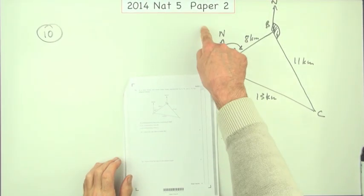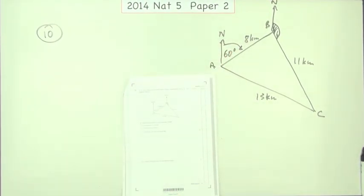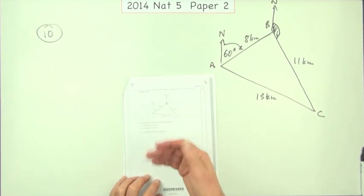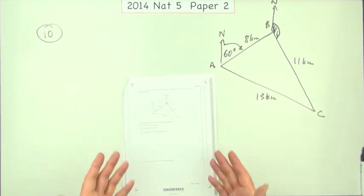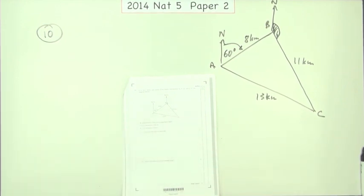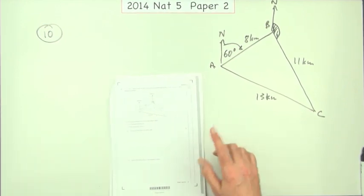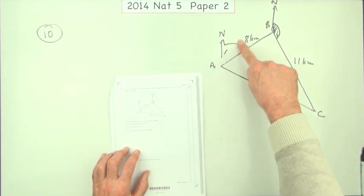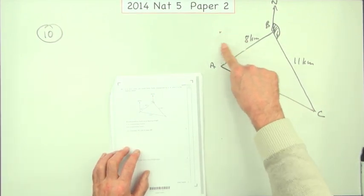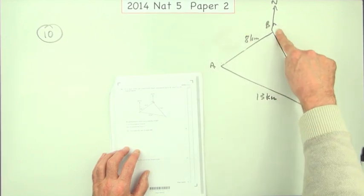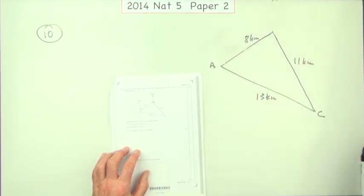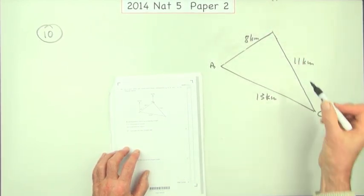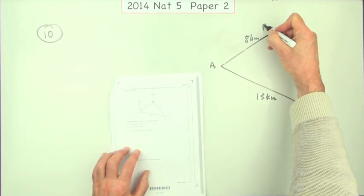Question 10 from Paper 2 of the 2014 National 5. This is a bearings question, except they've not really made it a full bearings question because they've done most of it for you. This is the type of question where originally it wouldn't have given you this information — it wouldn't have given any of these clues about putting north lines in and so on.